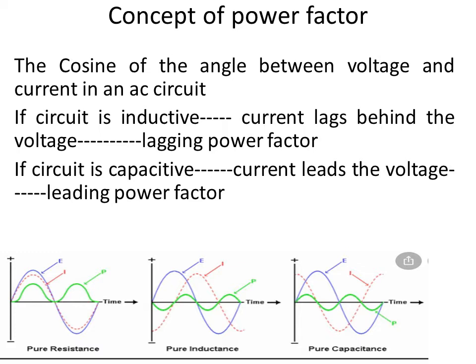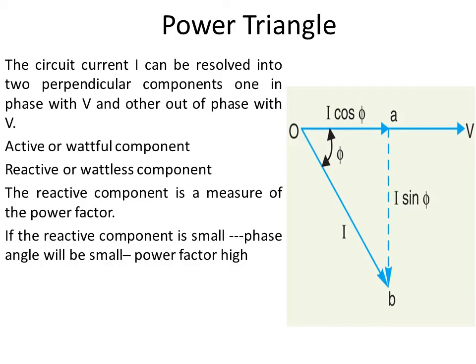If the circuit is inductive, current lags behind the voltage — so it is a lagging power factor. If the circuit is capacitive, then the current leads the voltage — so it is a leading power factor. This is the power triangle.